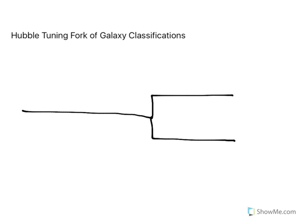So Hubble observed these ellipticals and lenticulars and spiral galaxies and arranged them into the shape of this tuning fork. So let's go look at these.